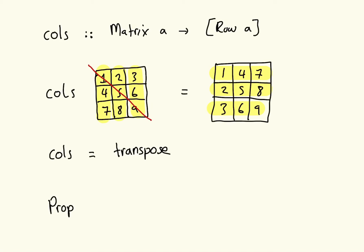The cols function also has a useful property: applying columns twice gives the identity function — cols composed with itself equals id. This is less trivial than the rows case, but it's easy to see intuitively: if you transpose a matrix twice, flipping about the diagonal and then doing the same again, you get back to where you started. Again, this may seem like a useless property, but it will prove very useful to us later on.